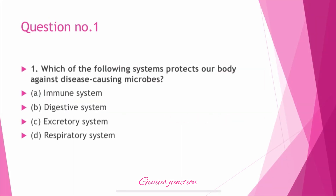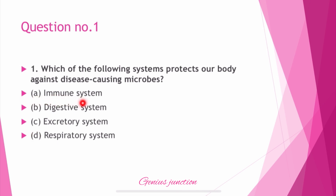Question number 1: Which of the following systems protects our body against disease-causing microbes? Options are: immune system, digestive system, excretory system, and respiratory system. The right answer is the immune system. The immune system protects our body against disease-causing microbes.